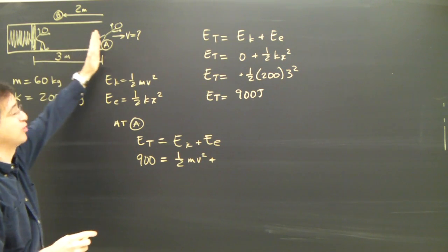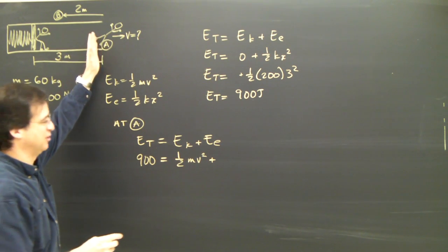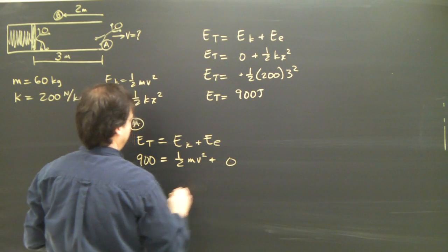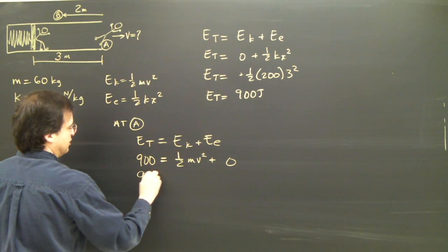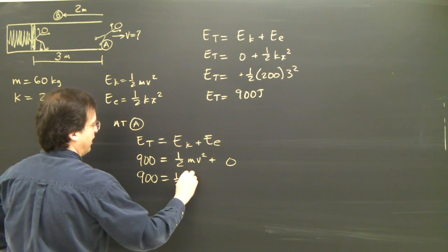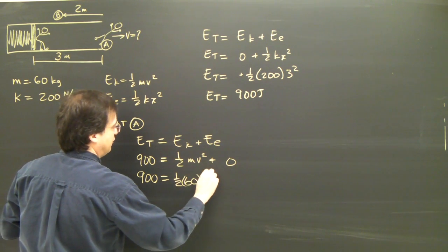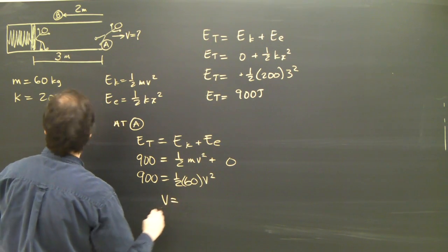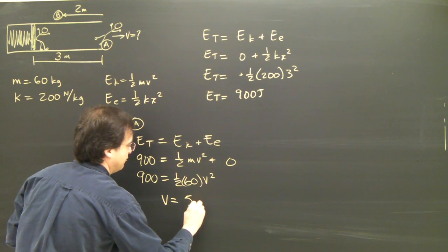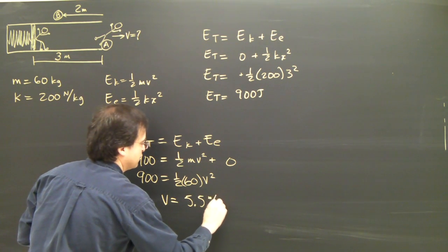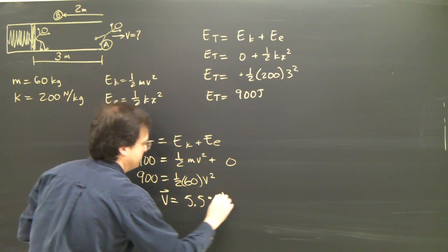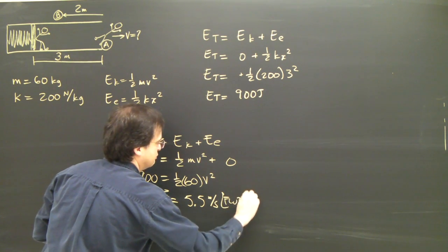The kinetic energy is one half mv squared. And the elastic energy is at this point. Because the spring is no longer compressed. That's where the spring sits when it's at rest. This is zero. So I plug in my numbers. 900 equals one half and my mass is 60 v squared. I get the velocity and it's 5.5 meters per second forward.